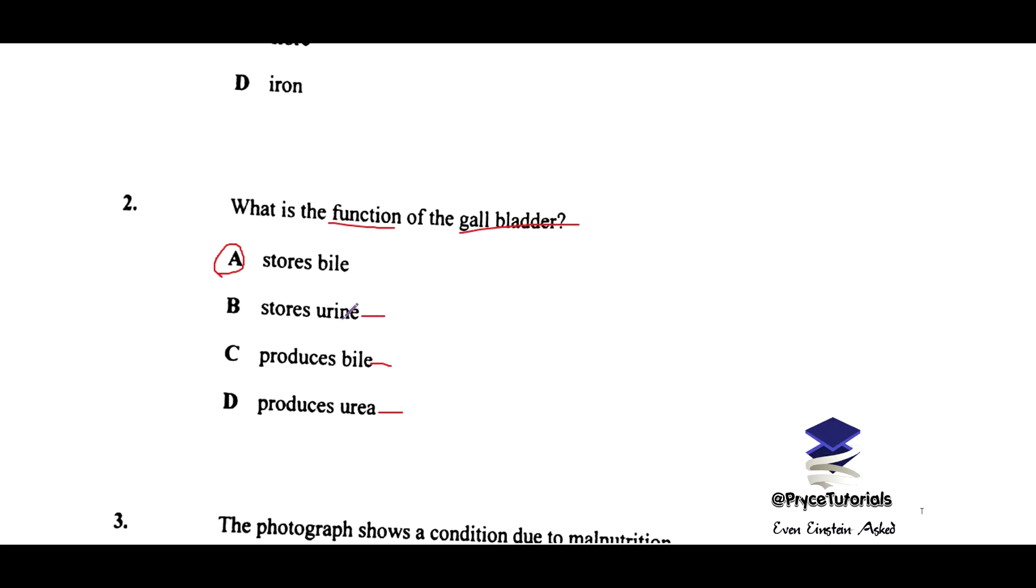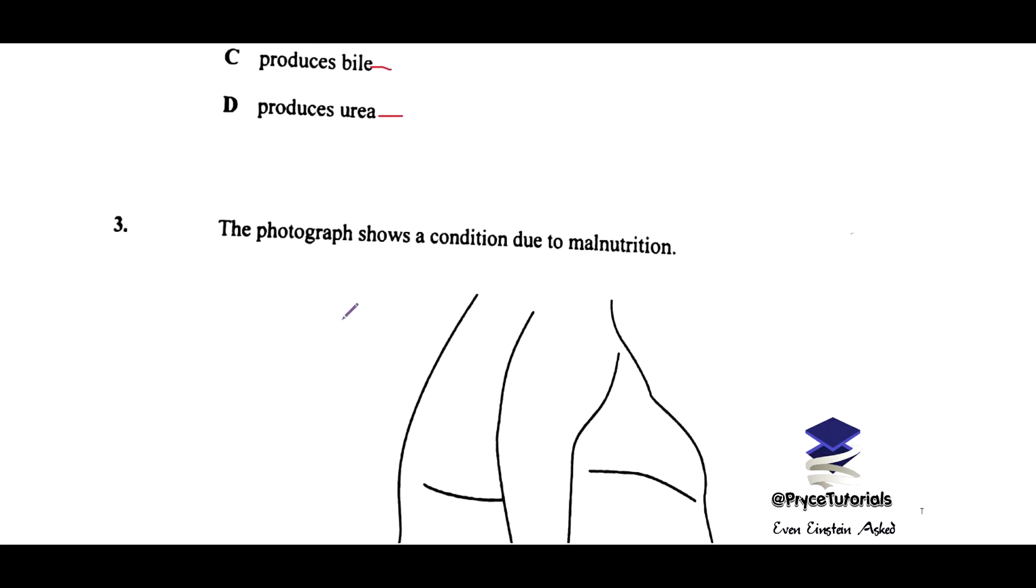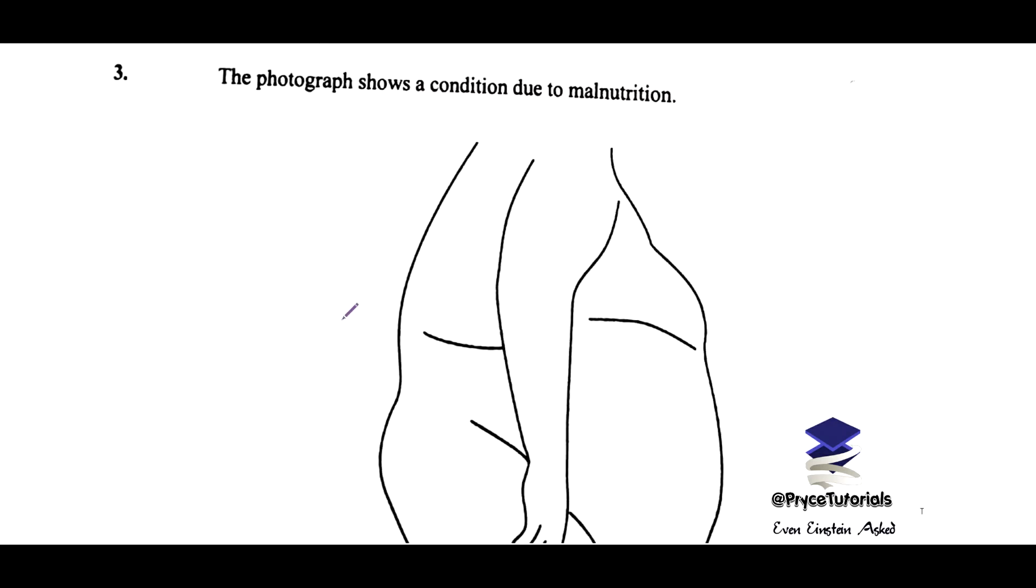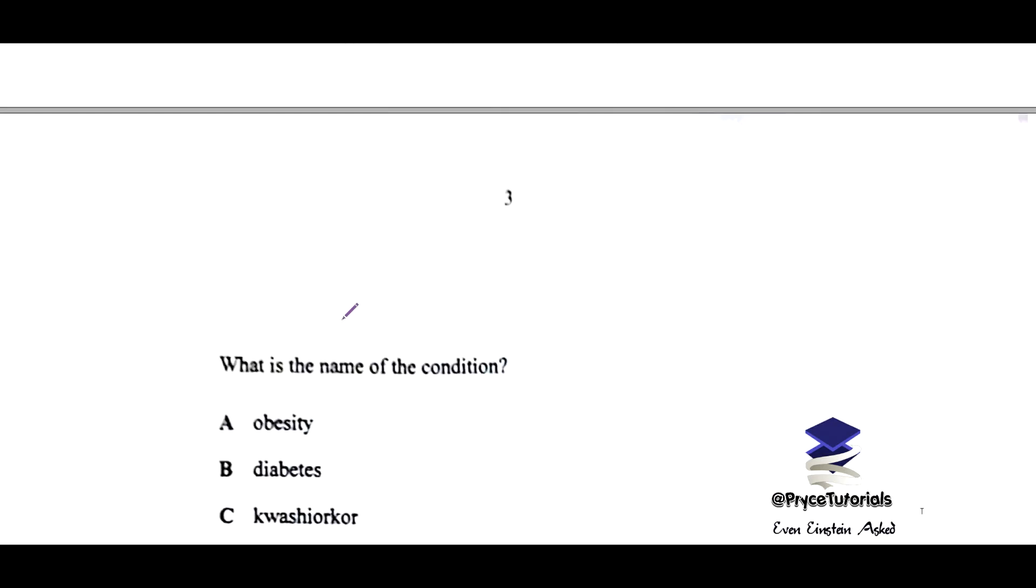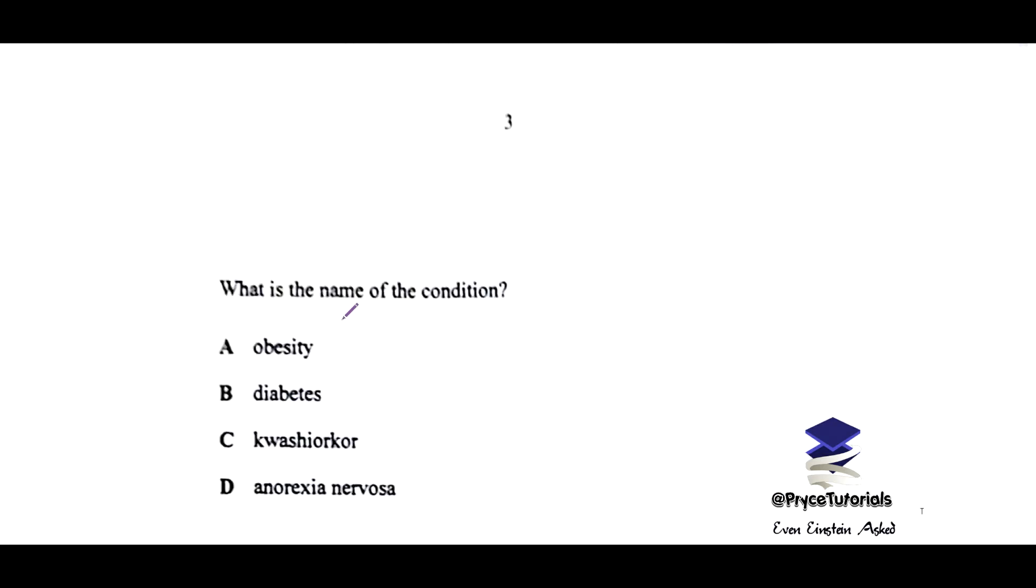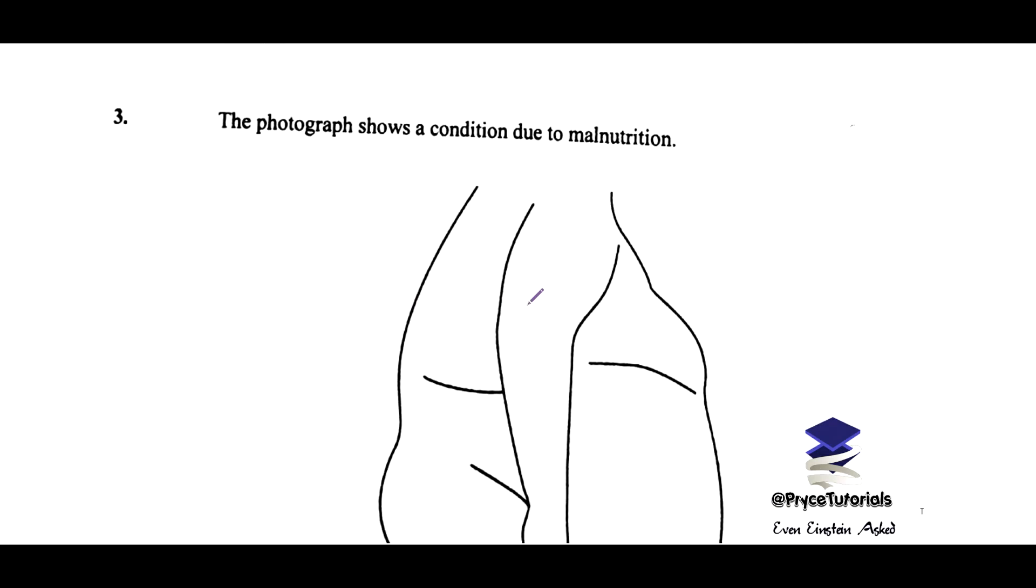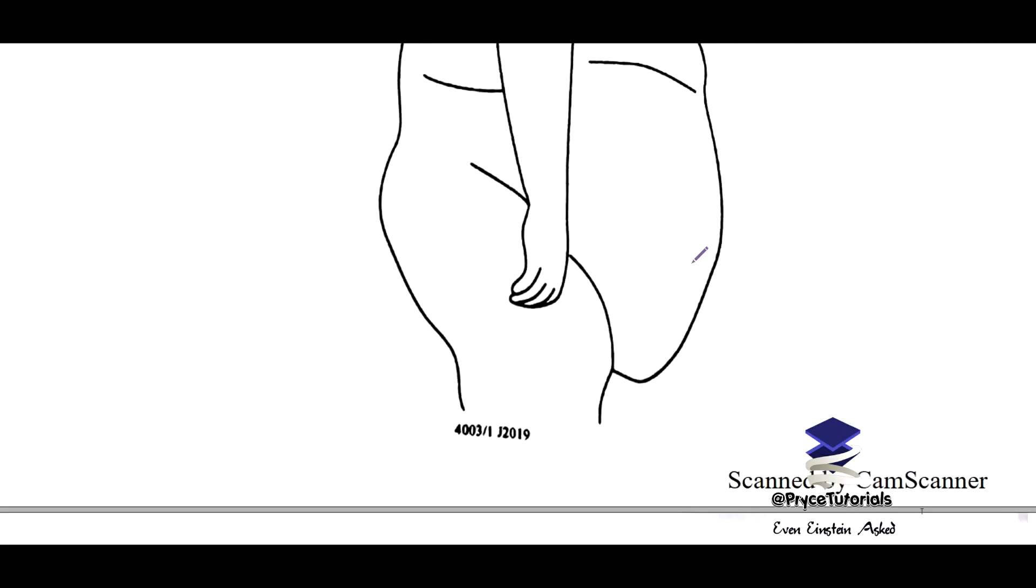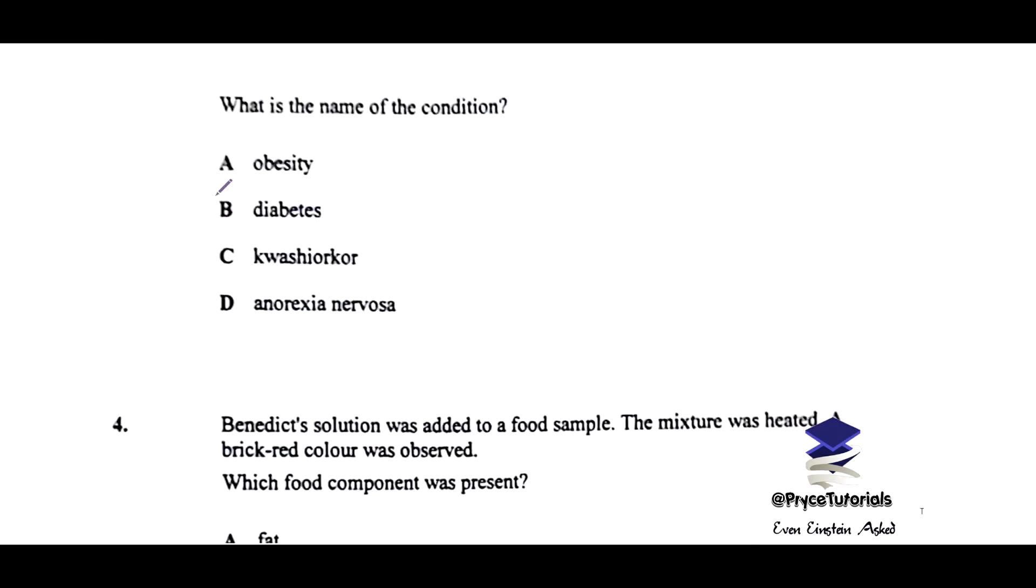So you want to eliminate these answers here. Right, we go on to three. The photograph shows a condition due to malnutrition, and the question is what is the name of the condition. This condition here, this person is obese. This person is obese, so the condition is called obesity. So you want to choose A there.